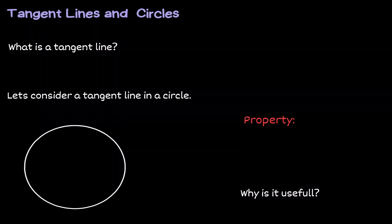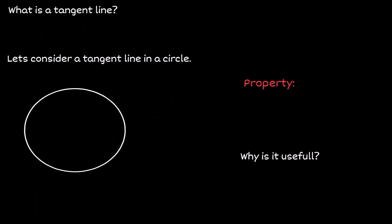Welcome, let's discuss tangent lines and circles. A tangent line is a line that intersects a curve only at one point.